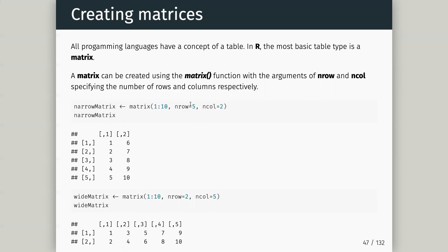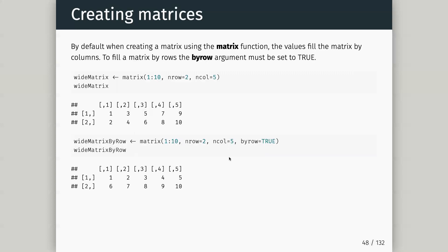One of the most basic types of tables is called a matrix — most programming languages have the idea of a matrix. We create a matrix using the matrix function: we need to tell it what data to put in and the number of rows and columns. Here I'm telling it to make five rows and two columns, giving it data one to ten, and you can see it fills up by column: one, two, three, four, five, six, seven, eight, nine, ten.